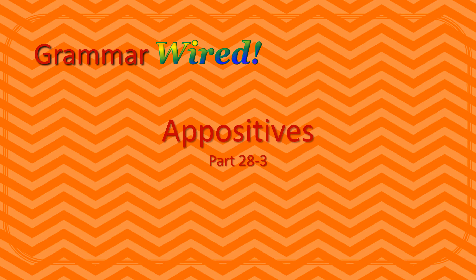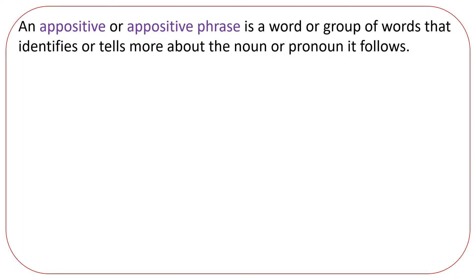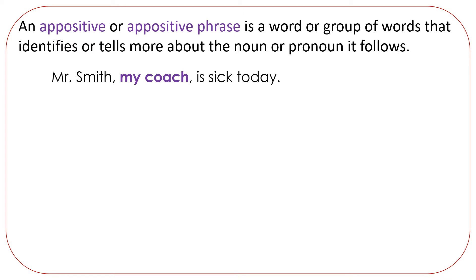Appositives. An appositive or appositive phrase is a word or group of words that identifies or tells more about the noun or pronoun it follows. For example: Mr. Smith, my coach, is sick today. 'My coach' is renaming or explaining who Mr. Smith is.